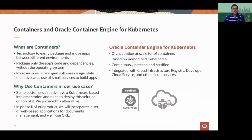We used the Oracle Container Engine for Kubernetes, also called OKE. Containers easily package and move apps — they package just the code and the dependencies without the operating system, so they have the advantage of being spun up and down quickly. Container Engine for Kubernetes provides orchestration at scale, is available globally in a number of Oracle Cloud regions, based off of unmodified Kubernetes, and is a managed service.